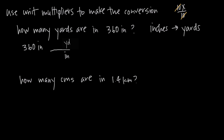We could put yards up in the numerator, but then we'd have to use this fraction to describe the relationship between yards and inches, and we don't really know exactly how many inches are in a yard. However, we do know how many inches are in a foot. So instead of putting yards here, we can put feet and say that there is one foot in 12 inches. We could then put feet in the denominator of the next multiplier, and do we know a relationship between feet and yards? Yes — there is one yard for every three feet.